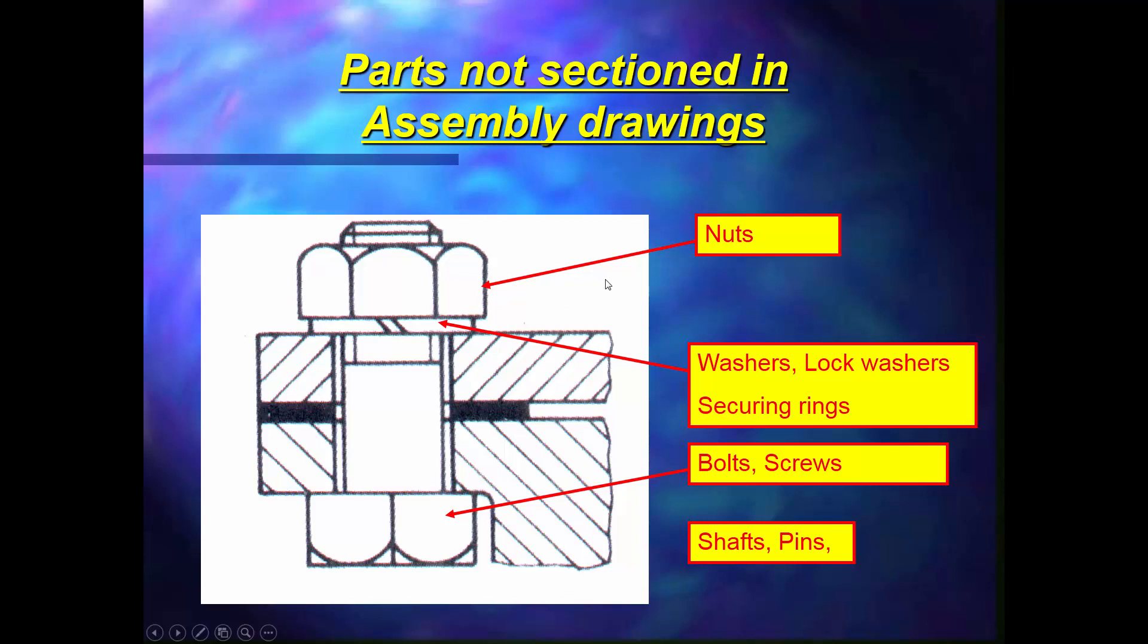Okay, the parts not sectioned in assembly drawings. Number one, as we said, the bolts and screws we don't section. Then we've got the bolt head and the lock nut on the end is not sectioned.